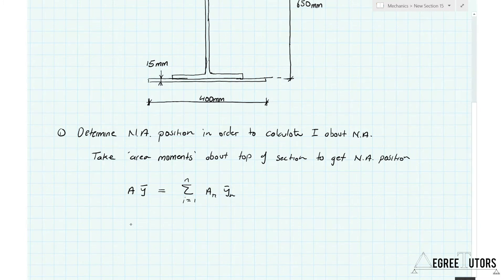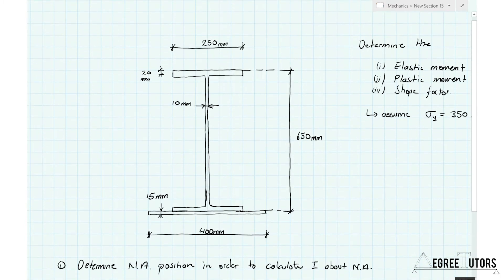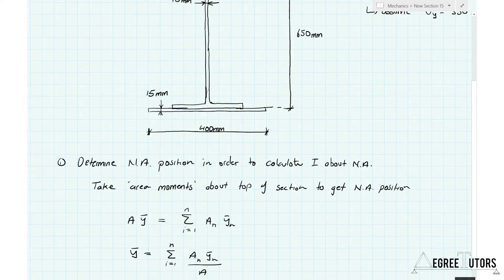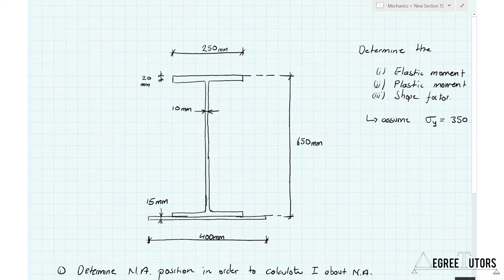Rearranging to get y-bar on its own: y-bar = Σ(A_n × y-bar_n) / A_total, where A_total is the total area of the combined section. I'm going to break this compound area into four sub-areas: an area for the top flange, an area for the web, an area for the bottom flange, and an area for the bottom plate — all simple rectangular sub-areas. Dealing with the top flange first.